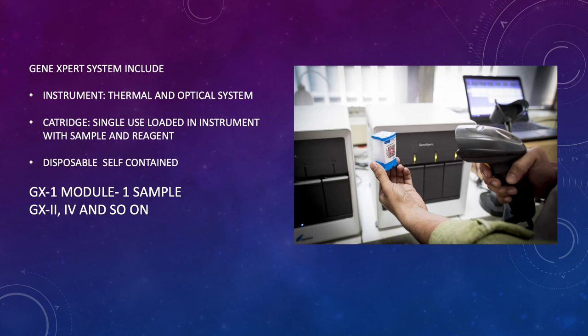The GeneXpert system includes modules into which the cartridge is inserted. A barcode scanner enters data into the computer, which is connected to a laptop, and this self-contained unit performs all the testing. The modules come in different numbers — GX1 has a single cartridge loading; GX2 has two; GX4 has four; GX64 has sixty-four. That is how the models of the machine are named.